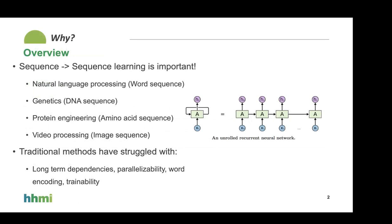There is a type of problem that has existed in machine learning for a while that has been hard to solve by traditional means — anywhere where you have a sequence input and a sequence output. The crucial thing about sequence-to-sequence learning is that you're not sure how long a sequence is going to be. It could be two words, it could be 50 words, or it could be time-based. DNA and amino acids are examples of this, and these problems in language have been greatly transformed by the transformer architecture.